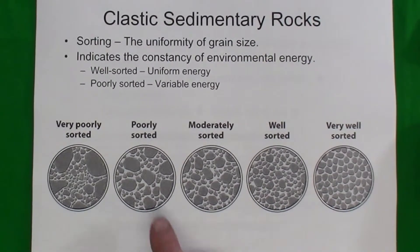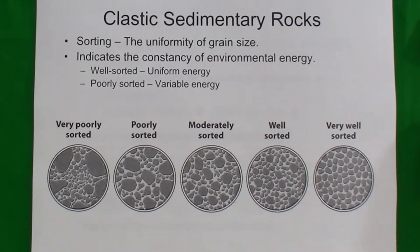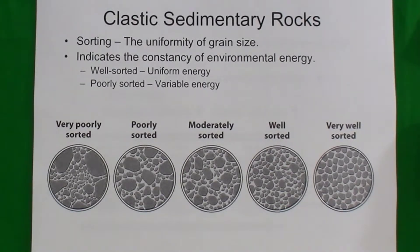Poorly sorted sediment contains a variety of clast sizes within the rock. This means it was transported by something with enough energy to carry both large and small particles — a good example would be during a flood or glacial transport.